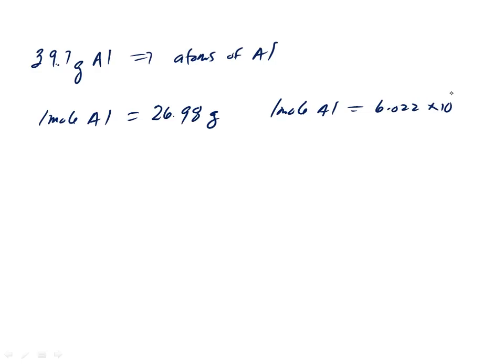All right, let's go on to the next type of problem. The next problem is someone says I have 39.7 grams of aluminum, and they would like to know how many atoms of aluminum do I have. For this one we need to know how much one mole of aluminum weighs. One mole of aluminum weighs according to the periodic table 26.98 grams. And the other thing we need is we need to know that one mole of anything, in this case one mole of aluminum, is equal to Avogadro's number of aluminum atoms.